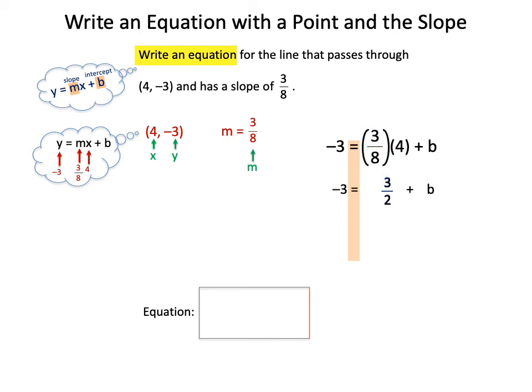Then you'll pull the rest of the equation down. Negative 3 equals 3 halves plus b. And in order to isolate b, you will need to subtract 3 halves from both sides so that you can eliminate that on the right-hand side. Negative 3 and negative 3 halves are like terms, so we're going to add those together. And I'll show you the work on those.